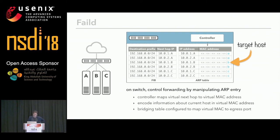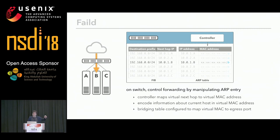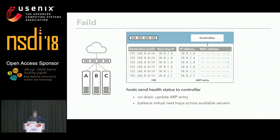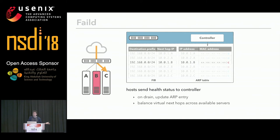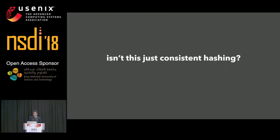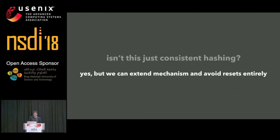You have a transitive relationship between the VIP and the target host in the POP, and you configure the bridging table to map virtual MAC to egress port. If server B wants to remove itself from service for upgrade, it notifies the controller, which remaps the ARP table entries to map to new healthy hosts. The entry previously mapping to B now maps to C. This change will necessarily break any ongoing transport connections — and yes, this is consistent hashing, specifically consistent hashing in hardware.